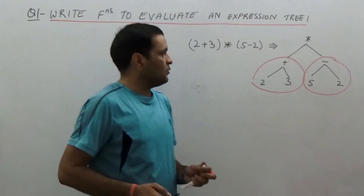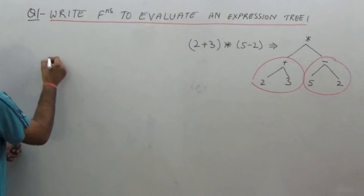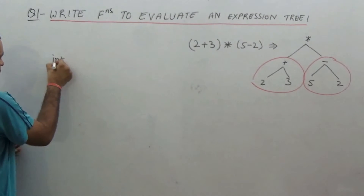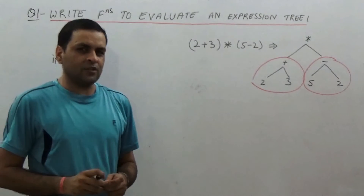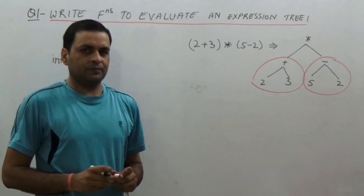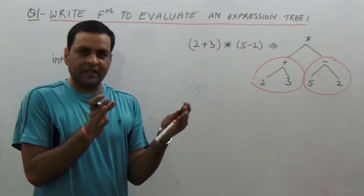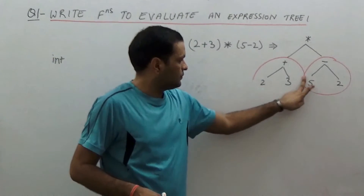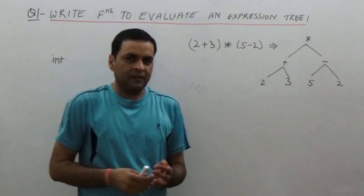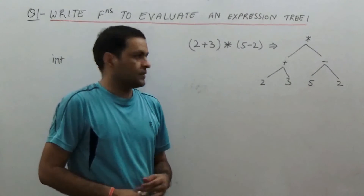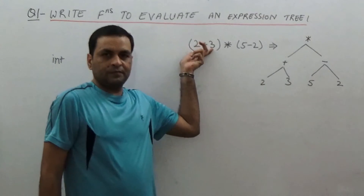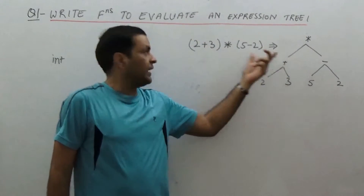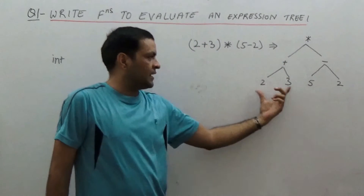Let's try to write a function for this. Our function should be returning an integer. In the expression tree, all the operators are non-leaf nodes and all the operands are at leaf nodes.